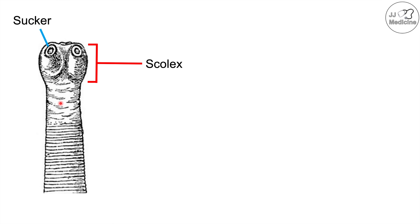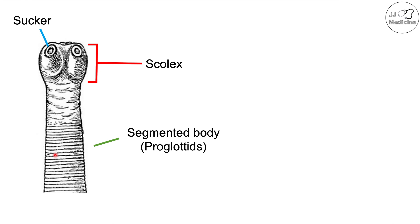As we go down the tapeworm it leads into an unsegmented neck, and the tapeworm becomes flatter in appearance leading into a segmented body. Each of these segments is known as a proglottid, and proglottids contain the eggs that are used to infect other hosts.